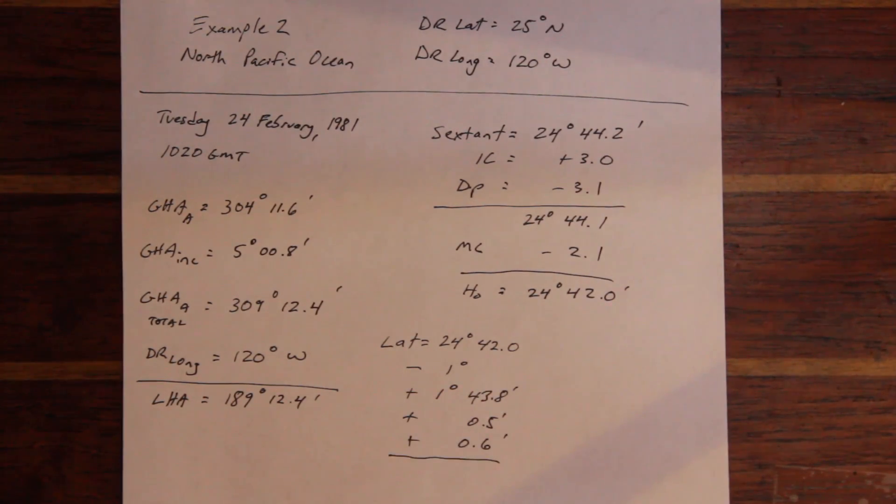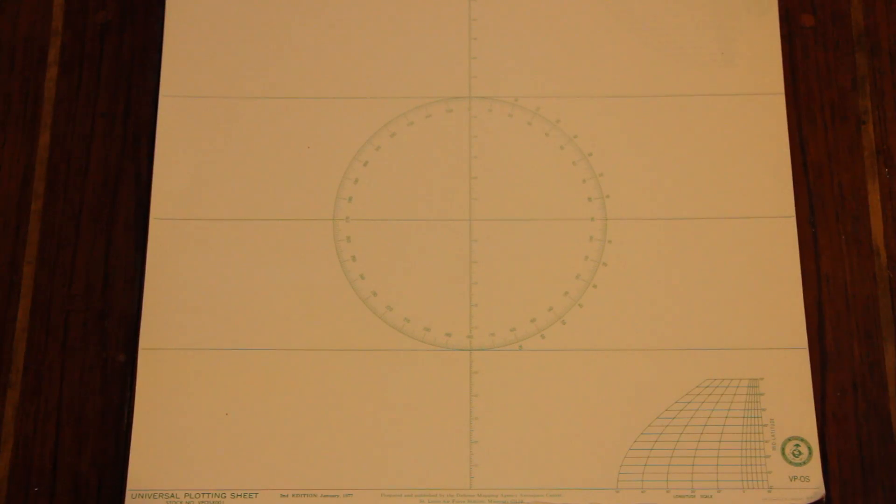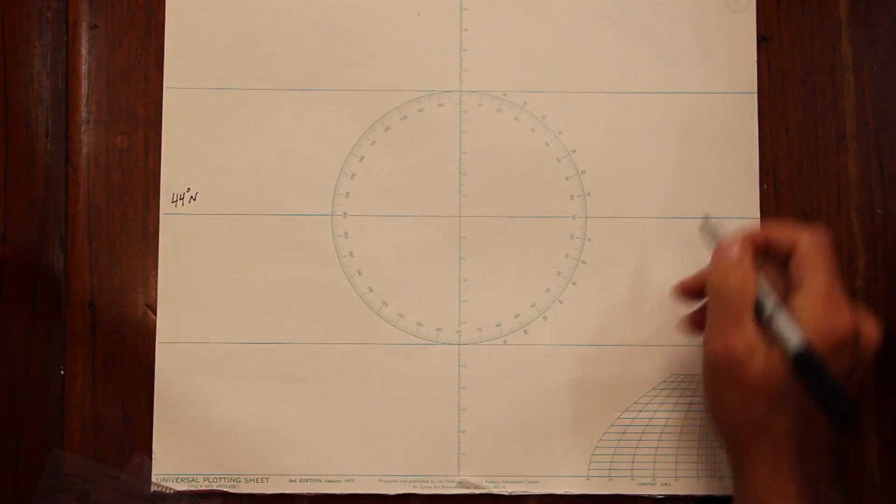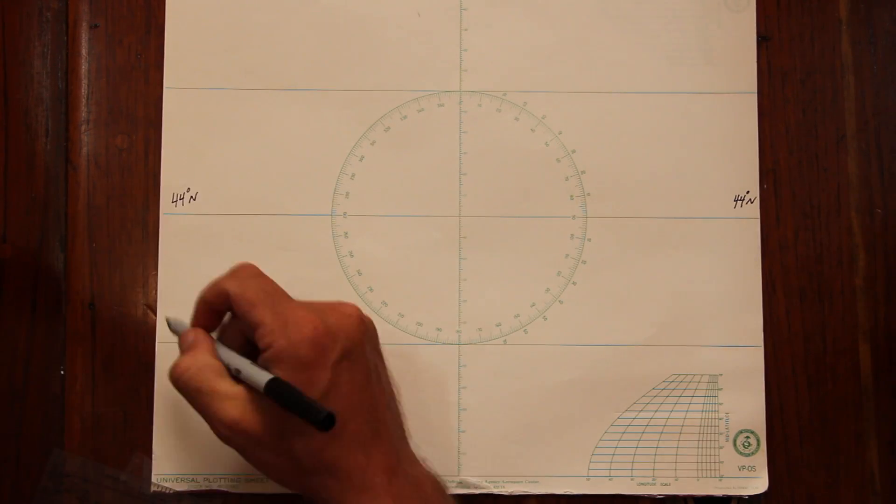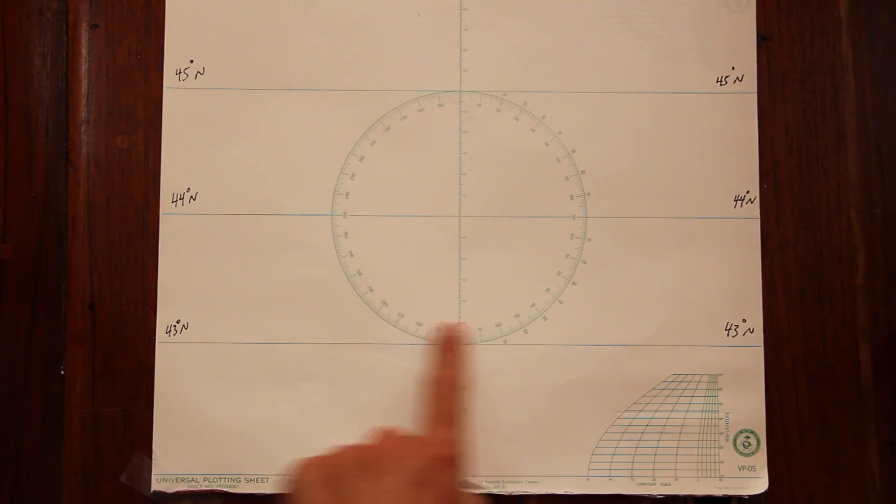When it comes to plotting our celestial fixes, it's perfectly sufficient to plot on a chart. However, charts can become cluttered easily and often times the scale is inappropriate. The universal plotting sheet is a way to create your own charts for celestial navigation fixes. The first step in creating a UPS is to plot the mid-latitude. This is the latitude closest to your estimated position. From there, filling out the neighboring latitudes is easy.